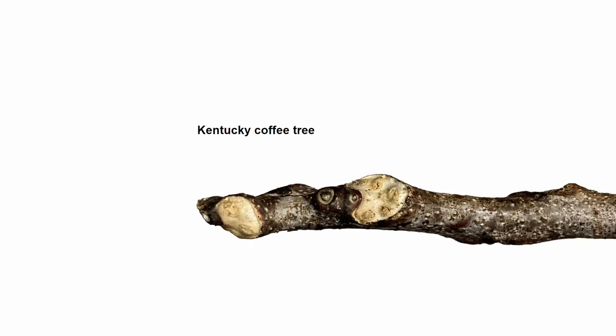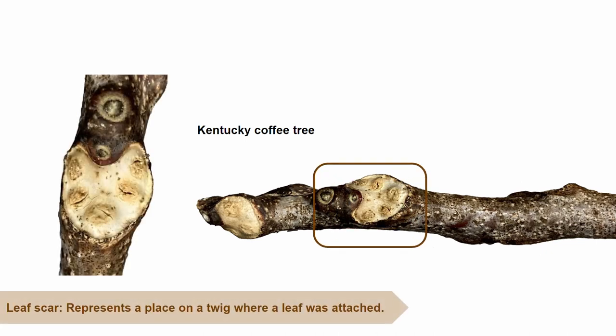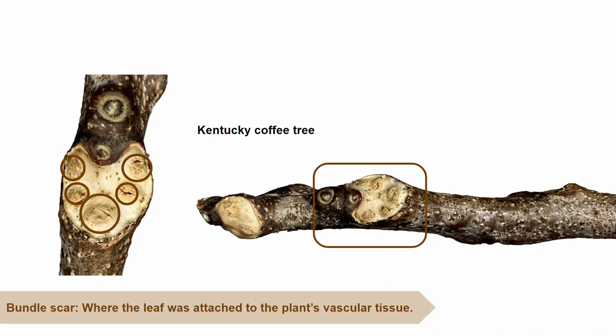Besides types of buds, leaf and bundle scars are important to know. This is a twig of a Kentucky coffee tree that will be used to help us identify leaf and bundle scars. The pale bean-shaped area on this twig is the leaf scar — a leaf scar represents a place on the twig where a leaf was attached. Inside of the leaf scar is a bundle scar, which is where the leaf was attached to the plant's vascular tissue.